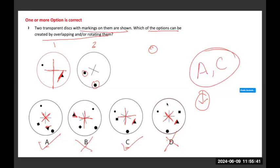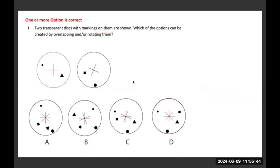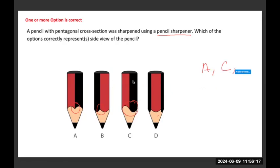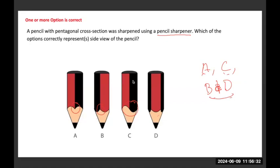A pencil with a pentagonal cross-section was sharpened using a pencil sharpener. Which of the options correctly represents the side view of the pencil? If you observe the options carefully, we are getting two or three conditions. One is this condition, second is this condition, and third is this condition. D may be the same condition as B, so either the option has to be A, C, B, or D — B and D are practically the same because both are the same view.